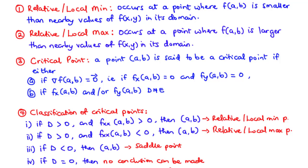Considering a small region or interval within the domain of the function, the point at which the smallest value is experienced is said to be the relative minimum point, and the value of the function at that point is said to be the relative minimum value. Similarly, the point at which the largest value is experienced is said to be the relative maximum point, and the value of the function at that point is said to be the relative maximum value.